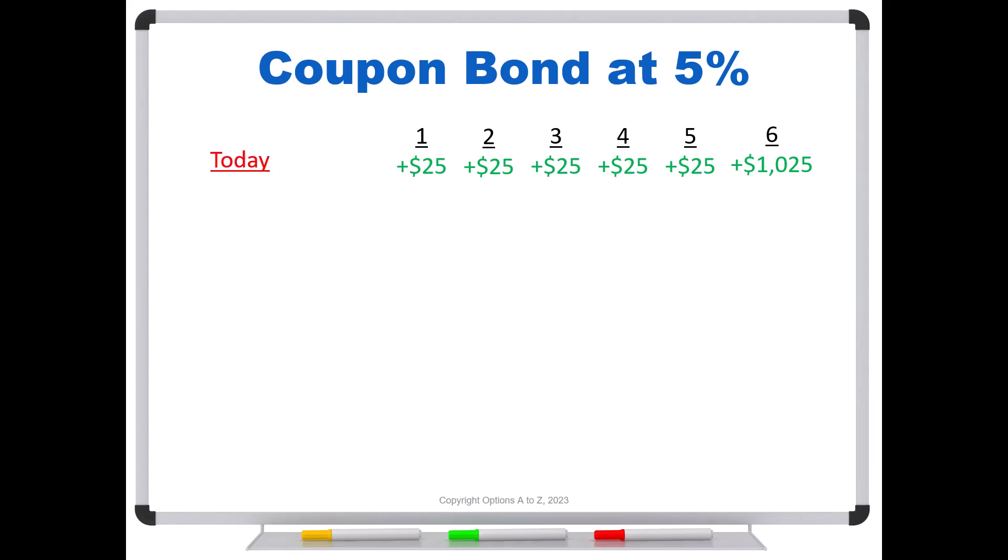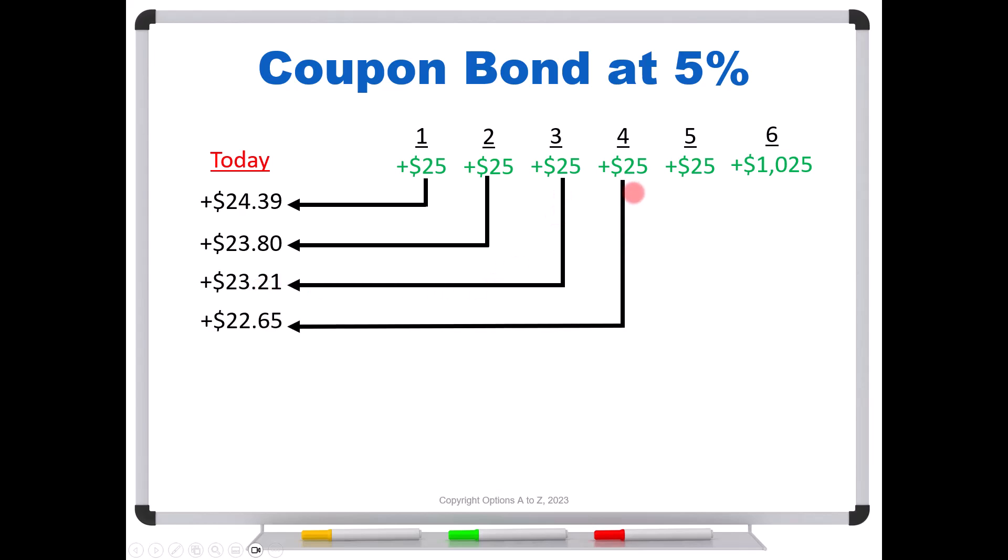What are all of these cash flows worth today? We do exactly the same math. We take $25 divided by 1.05 and divided by whatever the time is. If this is just six months from today, we would divide it by a half a year. If we get a second $25 payment in one year, then we take $25 divided by 1.05. The third payment, we discount that one back as well. The fourth payment we discount back, the fifth payment, and the sixth payment. As before, we can see that as we start going out in time, these values start to fall. The $1,025 value today is $883.85. If we add all of these up, these six payments come up to exactly $1,000.